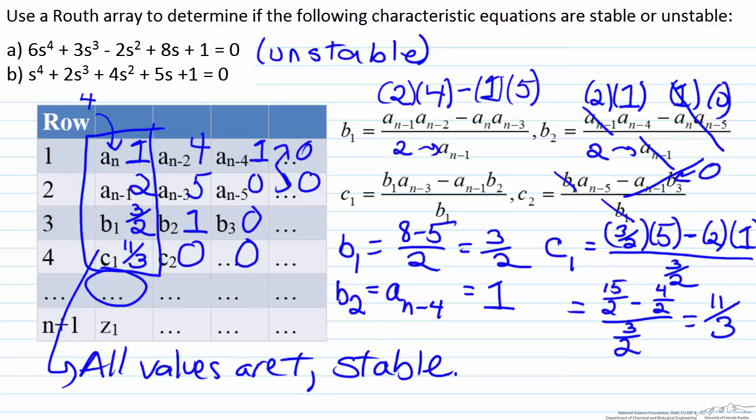In this screencast we showed how we can use a Routh array to determine the stability of a process which is being controlled. Again as a note, it can also be used to assess uncontrolled processes, but typically Routh arrays are done to analyze processes which have some sort of control to them.